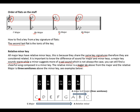A relative minor is a major 6th above the major key, and the relative major is 3 semitones above the minor key. To find the relative minor of C major, count 6 times: one, two, three, four, five, six — A is the relative minor key. So A minor is the relative of C major. To get back to the major, count 3 semitones from the relative minor: A, B, C — that gives you C major.